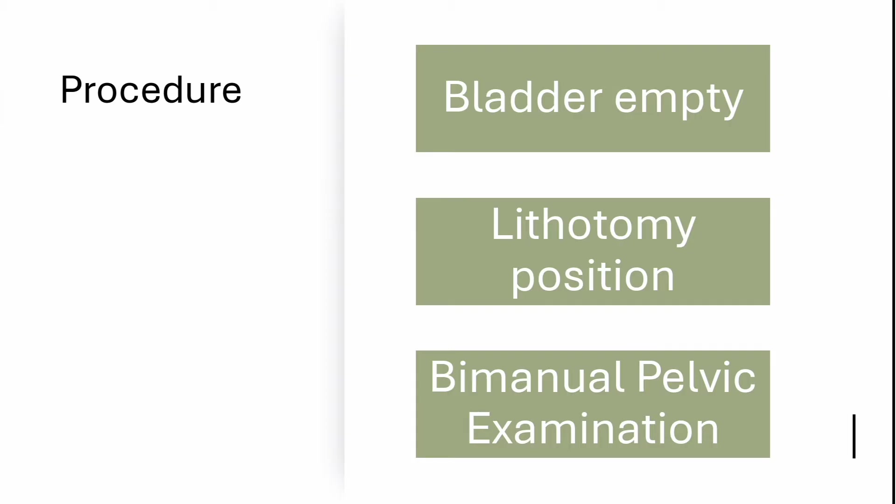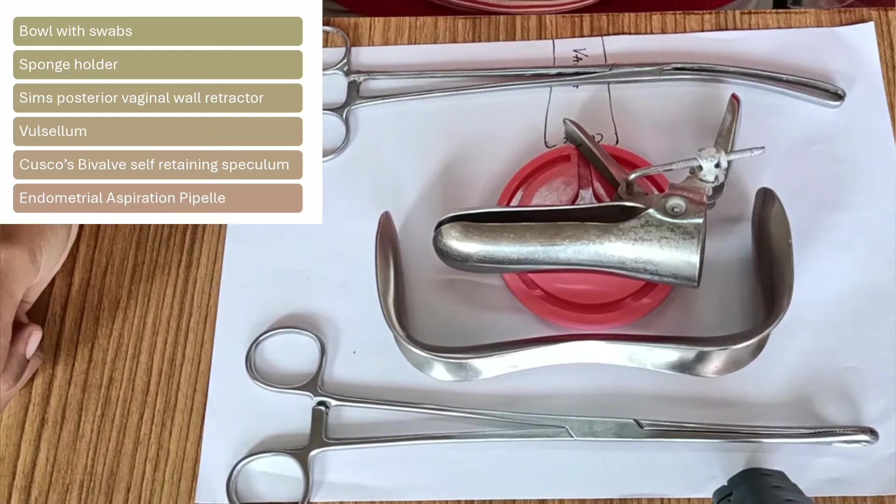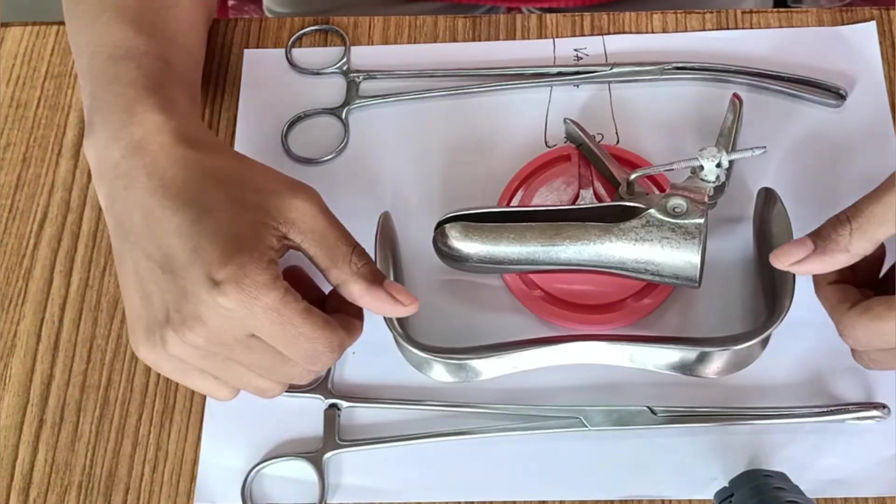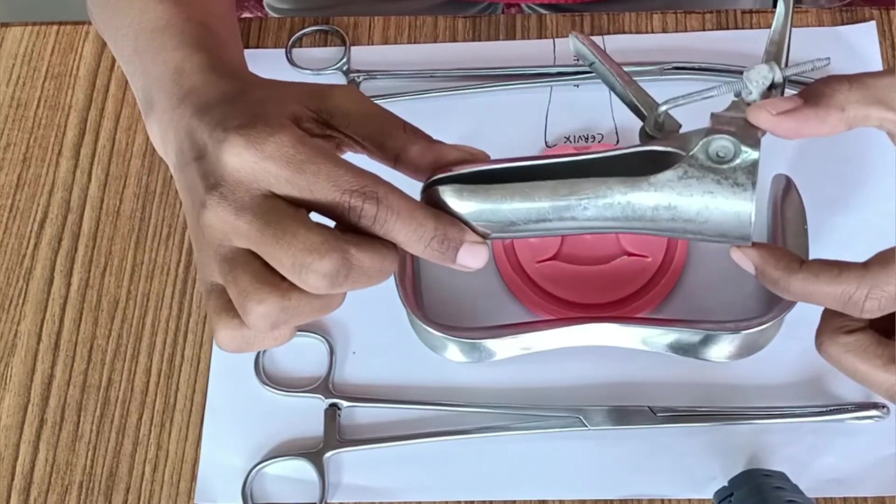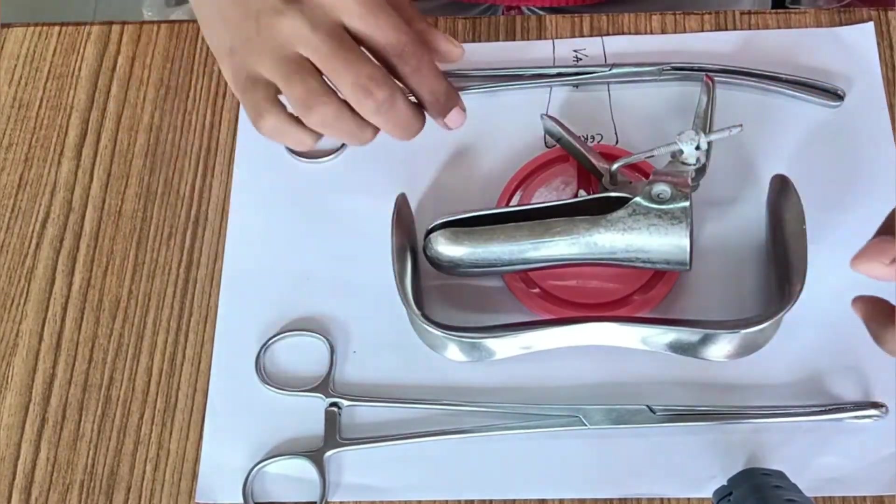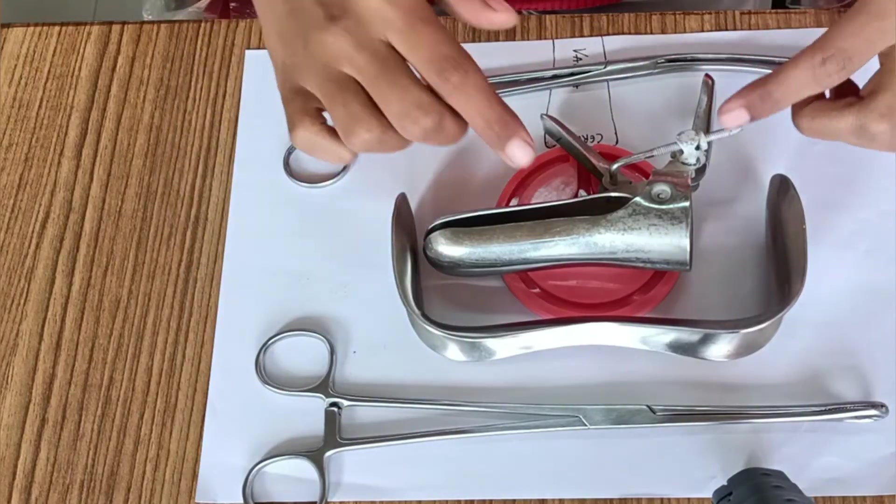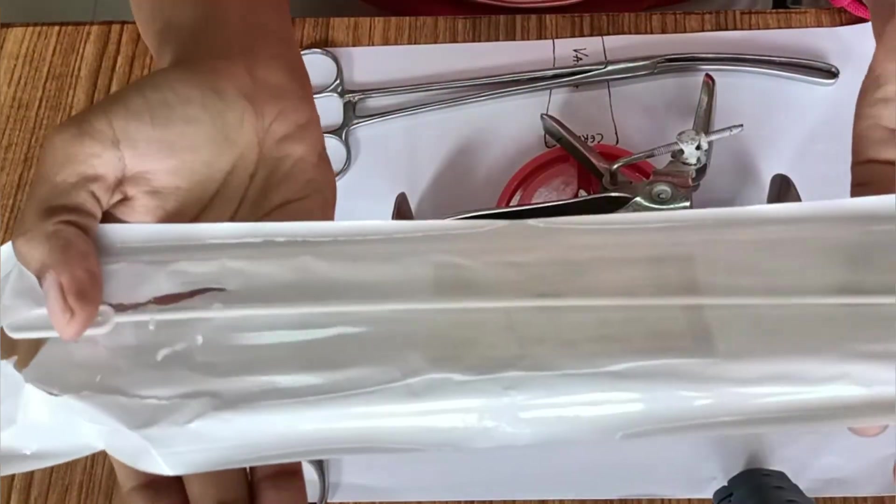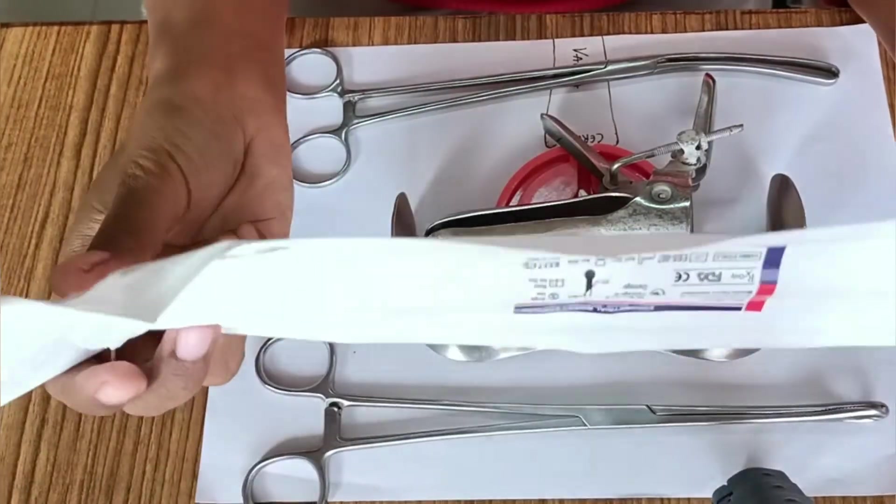Next we need instruments for the procedure. First, sponge holding forceps to clean the perineum and vagina. Next is a Sims posterior vaginal wall retractor. This is a Cusco bivalve self-retaining speculum, and this one is Vulsellum. Either we use Sims speculum with Vulsellum, or we can use Cusco speculum. Last, you require an endometrial sampling Pipelle. This is a Pipelle, it comes in sterile packing and is for single use only.